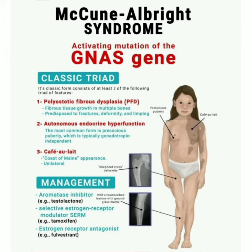Number three, there are café-au-lait spots with a Coast of Maine appearance and unilateral presentation. Looking at the image, we find the McCune-Albright syndrome patient presentation: precocious puberty, café-au-lait spots, and radiological findings including shepherd's crook deformity and well-circumscribed lesions with ground glass matrix.